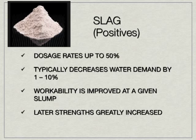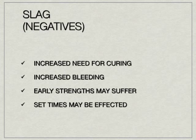Next is slag. The positives of slag include high dosage rates — you can replace the cement up to 50%. It typically decreases water demand by up to 10%, workability is improved at a given slump, and later strengths are greatly increased. The negatives of slag, like fly ash, include an increased need for curing, an increase in bleeding, early strengths may suffer due to the lower cement content, and set times are also affected.